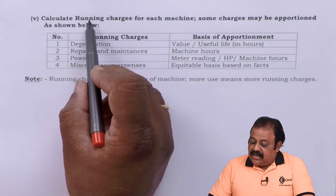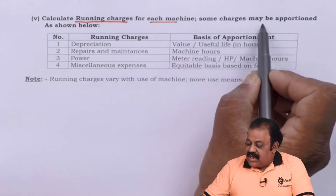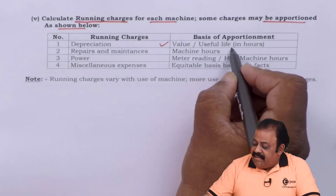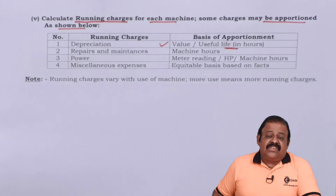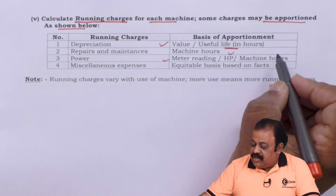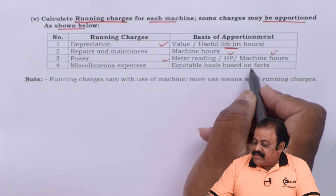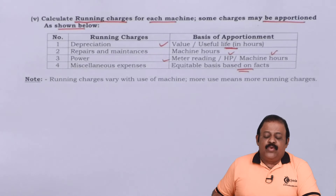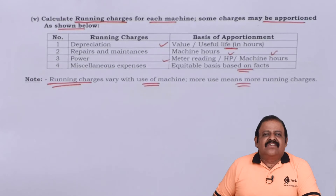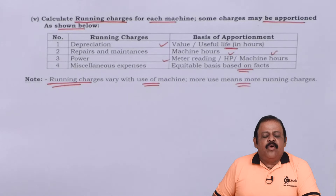We are required to calculate running charges for each machine. Running charges include: depreciation based on useful life and value of machine given in hours; repairs and maintenance based on machine hours; power consumption based on meter reading, horsepower, and machine hours; miscellaneous expenses on an equitable basis. Note: running charges vary with the use of the machine — more use means more running charges. They are variable in nature; variable cost varies with output, rising or falling with output, and becoming zero when output is zero.